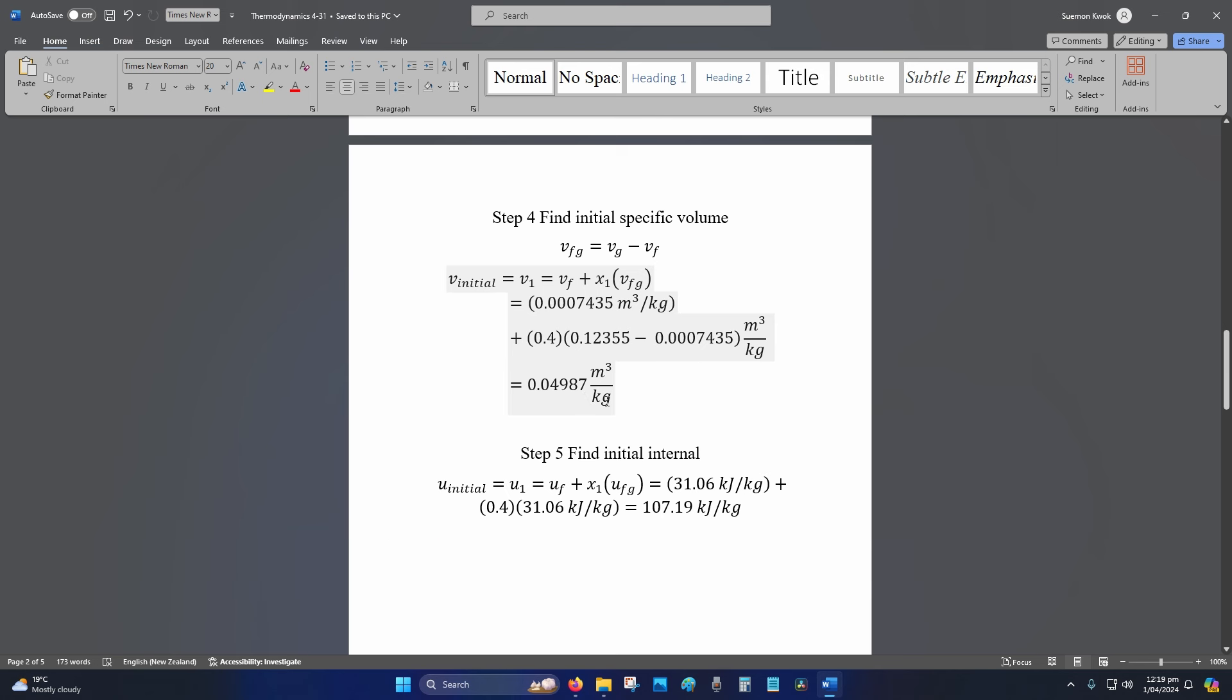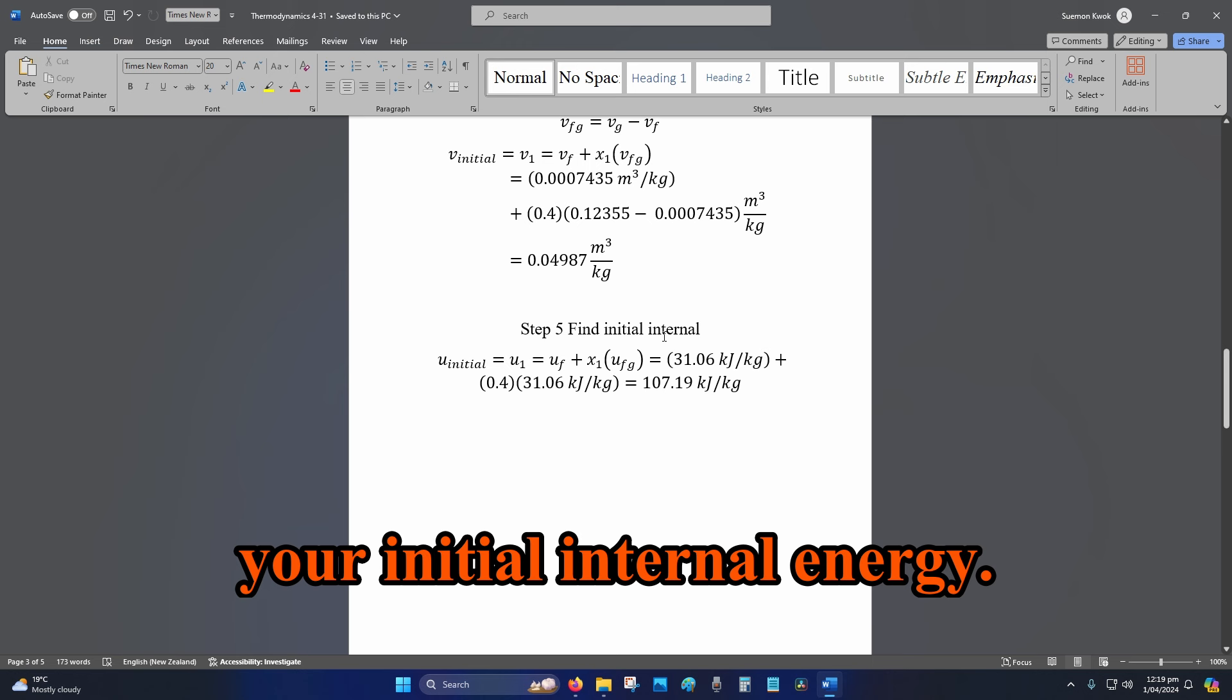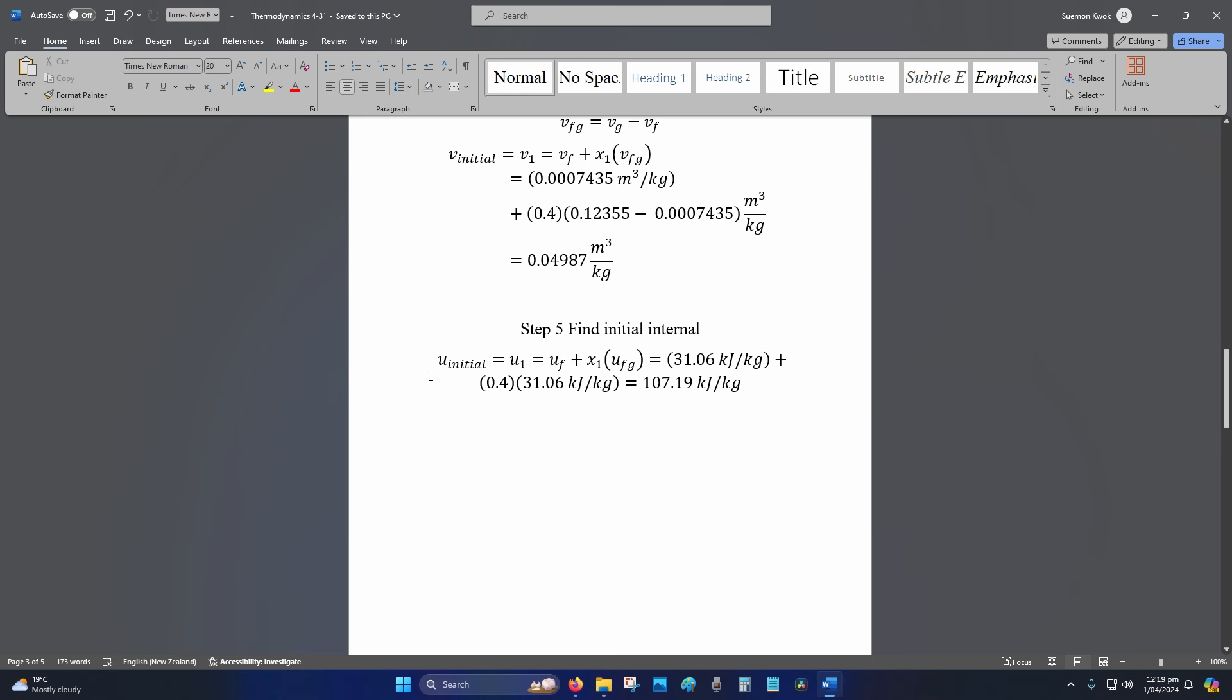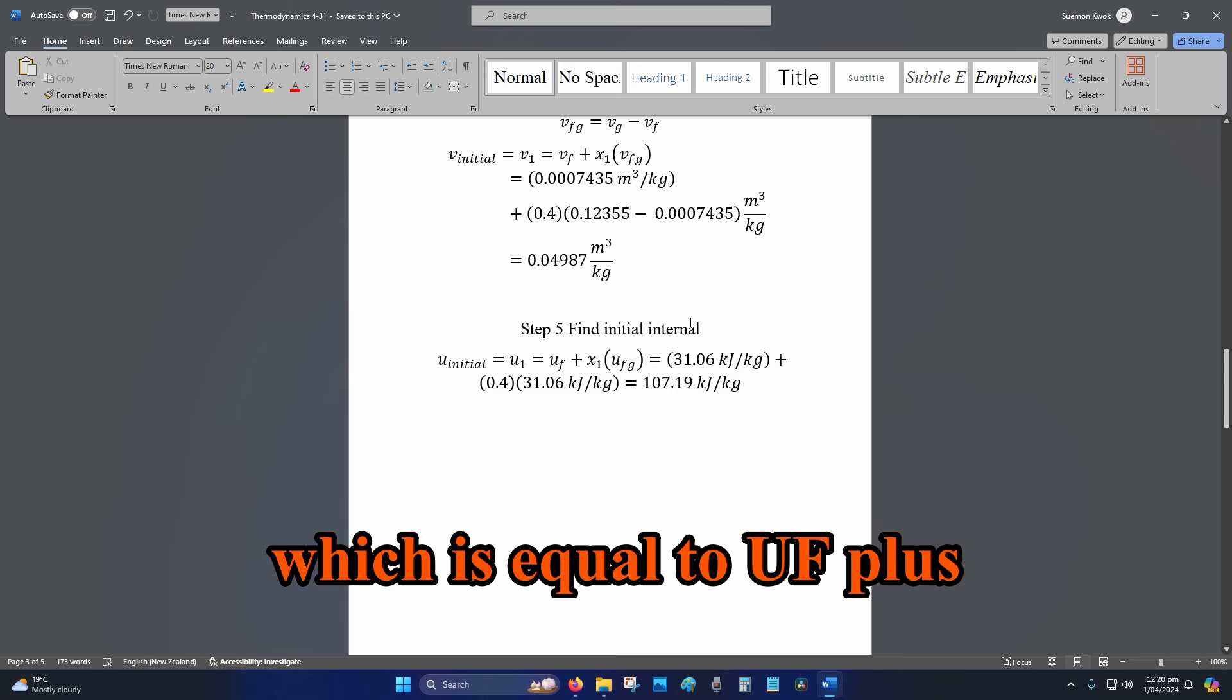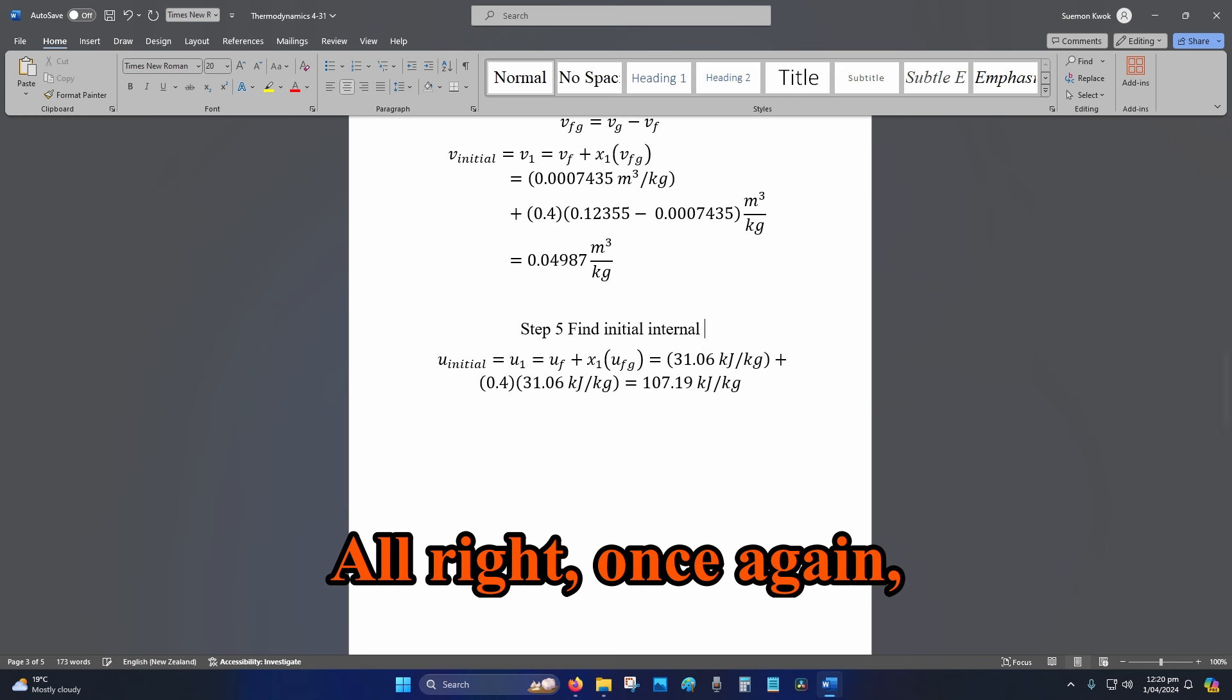Step 5: You want to find your initial internal energy. That is u_initial, which equals u_1, which equals u_f plus the quality multiplied by u_fg.